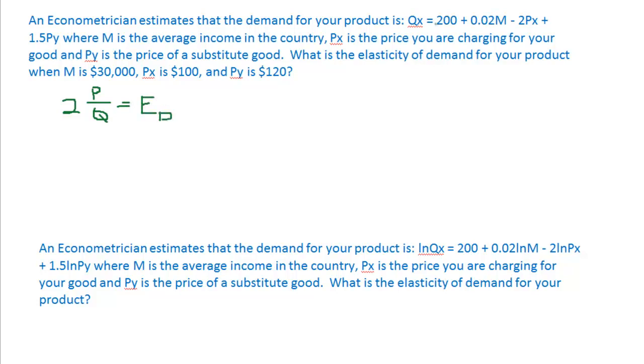We can do a similar thing if we're looking at income elasticity: 0.02 times income over quantity. And likewise, cross price elasticity would be the 1.5 times the price of the substitute good, which would be the 120 divided by the quantity. The problem is we don't know what quantity is.